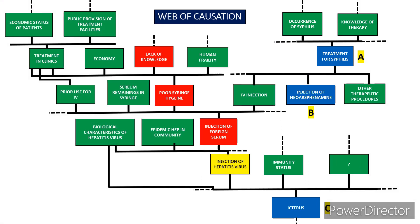In the syphilis and icterus example: treatment of syphilis (A) is causally associated with neo-arsphenamine (B) and also with icterus (C), but B and C have only a non-causal statistical association. Injection of hepatitis virus (J) is the most important factor for occurrence of icterus. The chain includes injection of foreign serum, poor syringe hygiene, and lack of knowledge. At any point in the chain, if you eliminate that causal factor, the hepatitis virus will not be injected and there will be no chance of icterus.